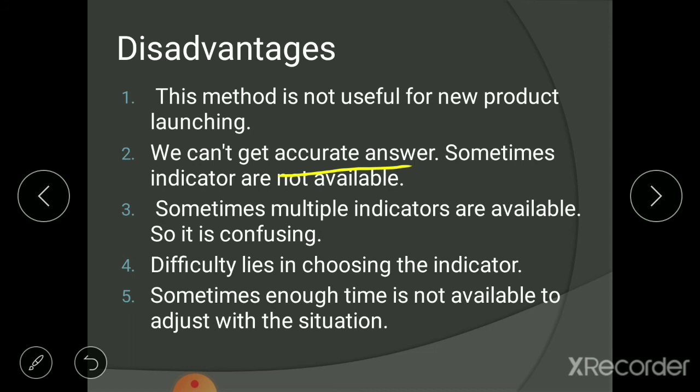The fourth disadvantage is the difficulty in choosing the right indicator. If there are many indicators available, which one do you choose? For a stationery producer, should you rely only on the number of students or on the number of business houses? Choosing the correct indicator remains a significant challenge.